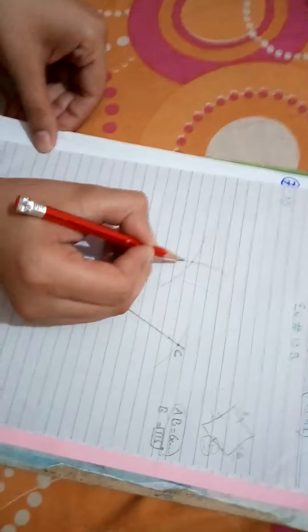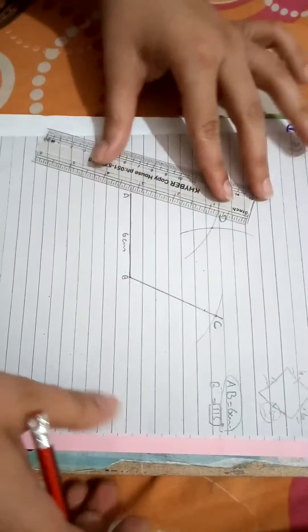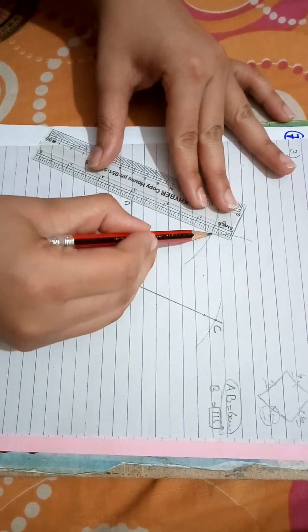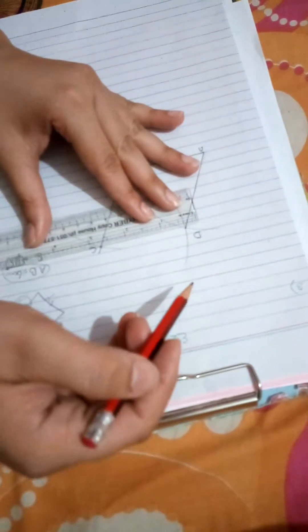The point where the two arcs intersect each other, give its name as point D. Now join all the points: D and A, and C and D.